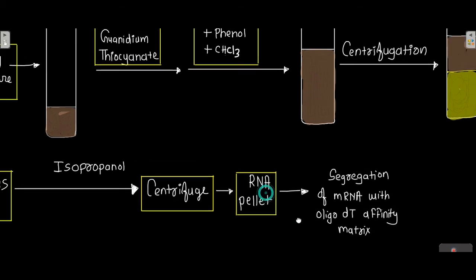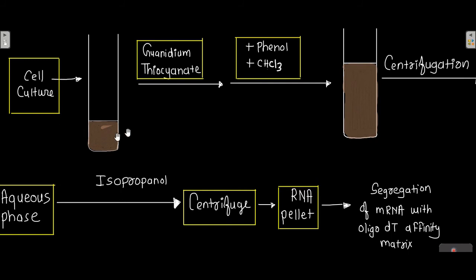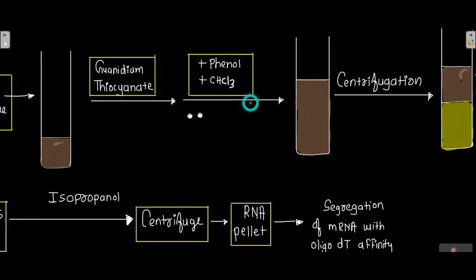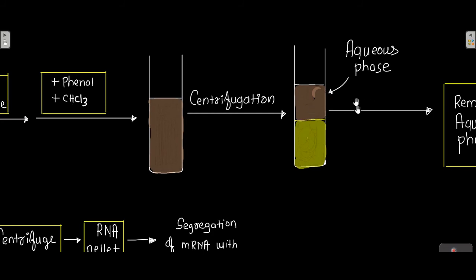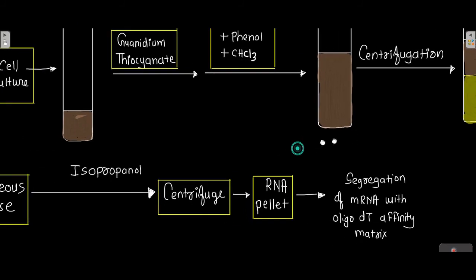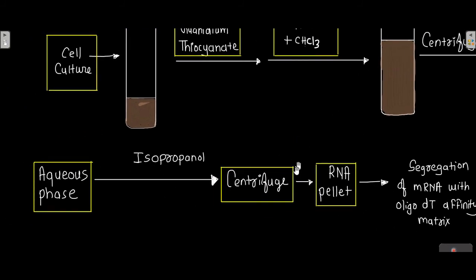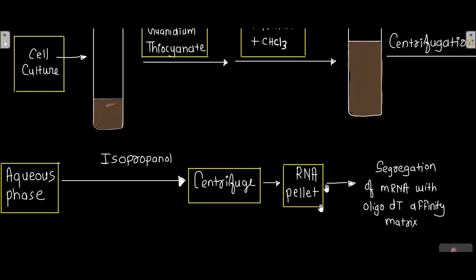To summarize the mRNA purification process: you take cell culture, add guanidinium thiocyanate and phenol-chloroform, then centrifuge. This step is similar to DNA isolation — the nucleic acid is in the aqueous phase. From that aqueous phase you isolate RNA, and then segregate the mRNA using an oligo-dT affinity matrix.